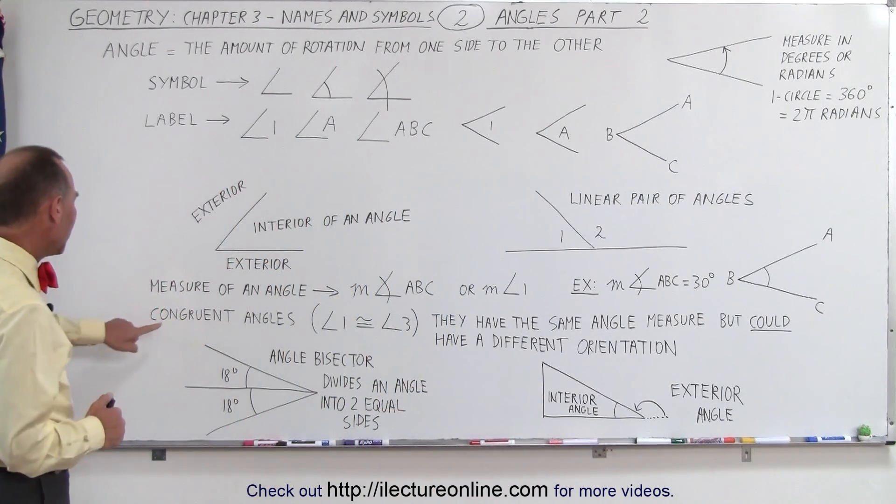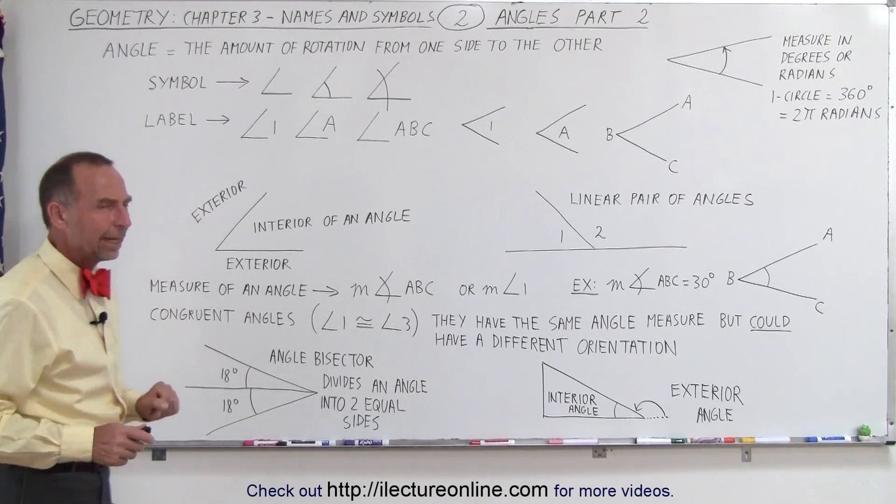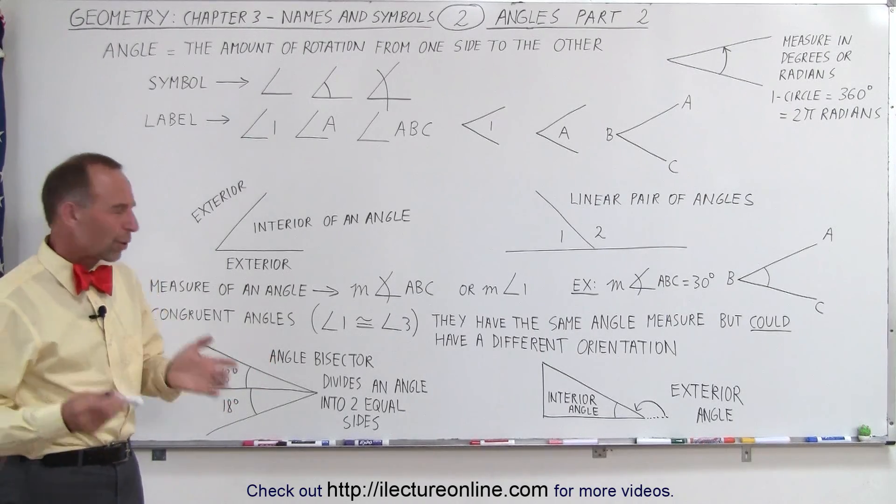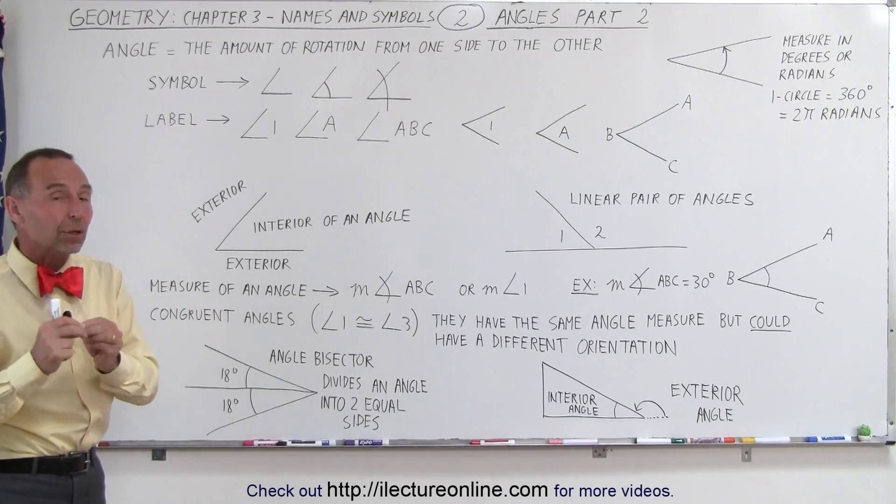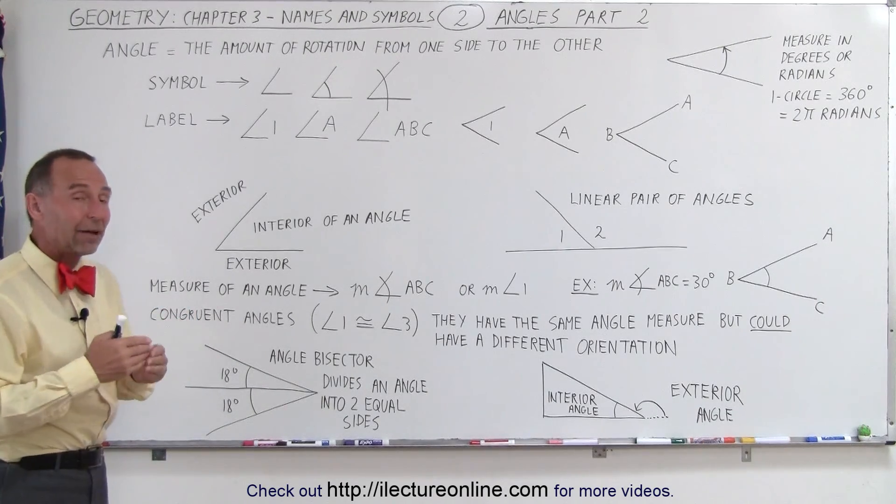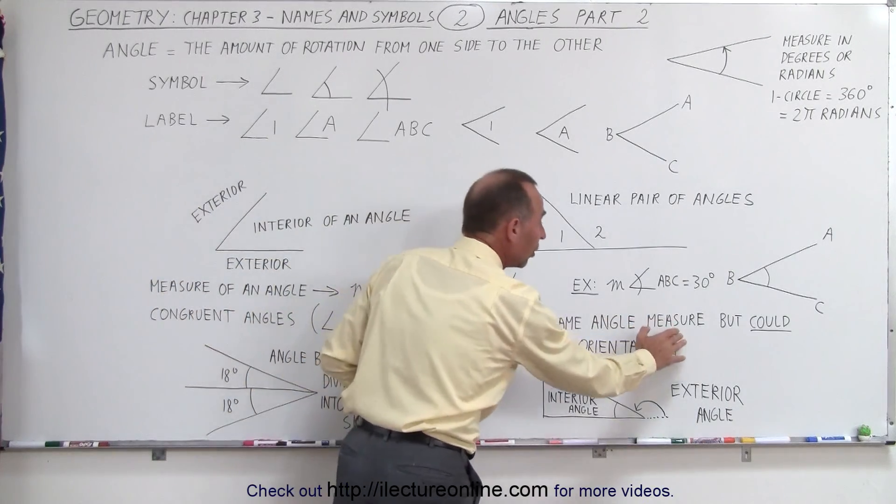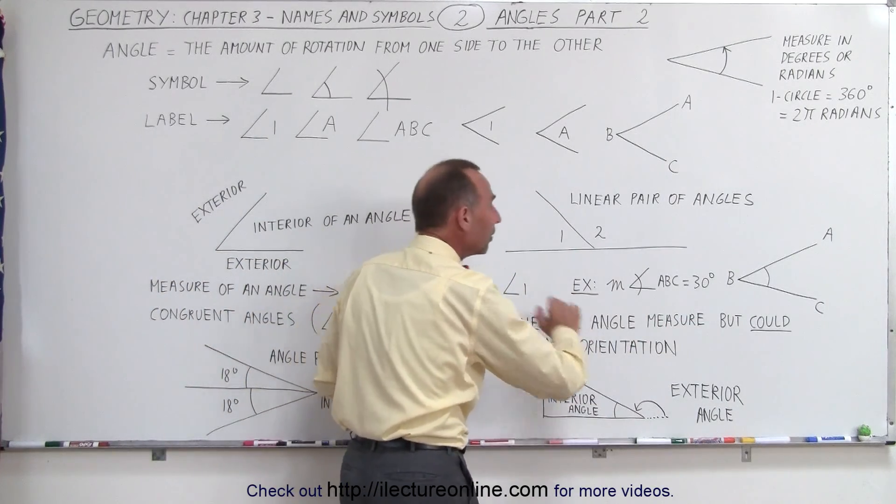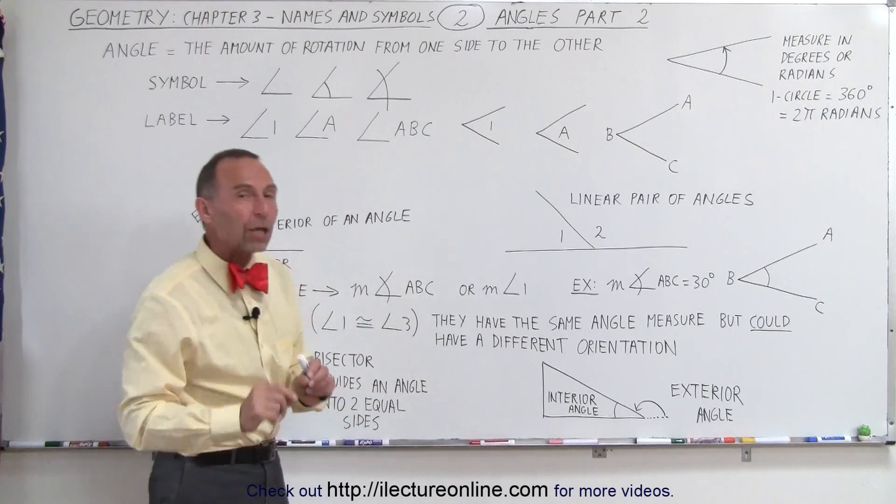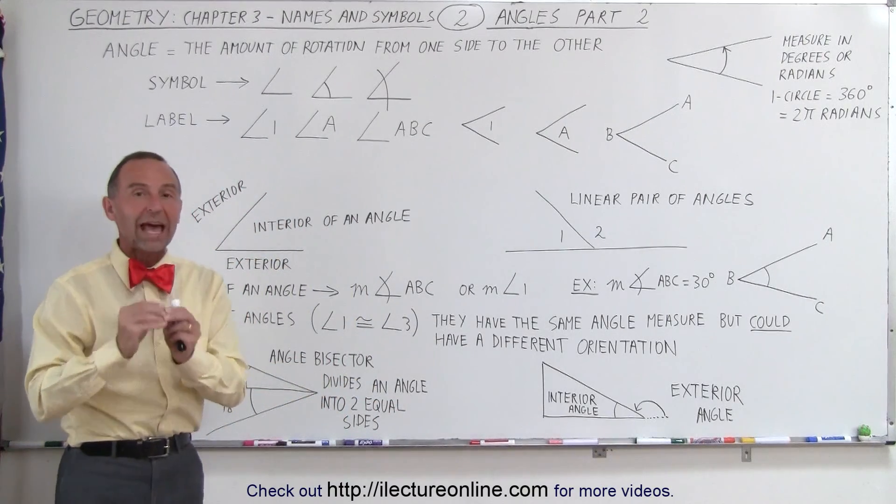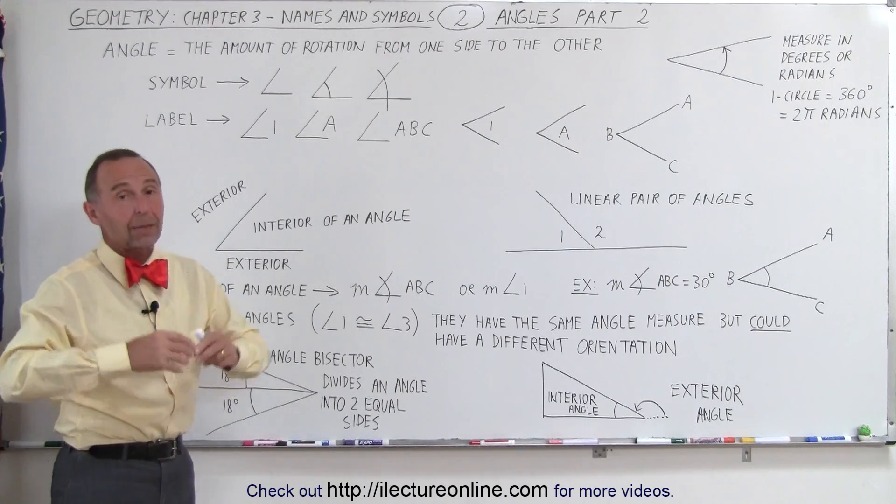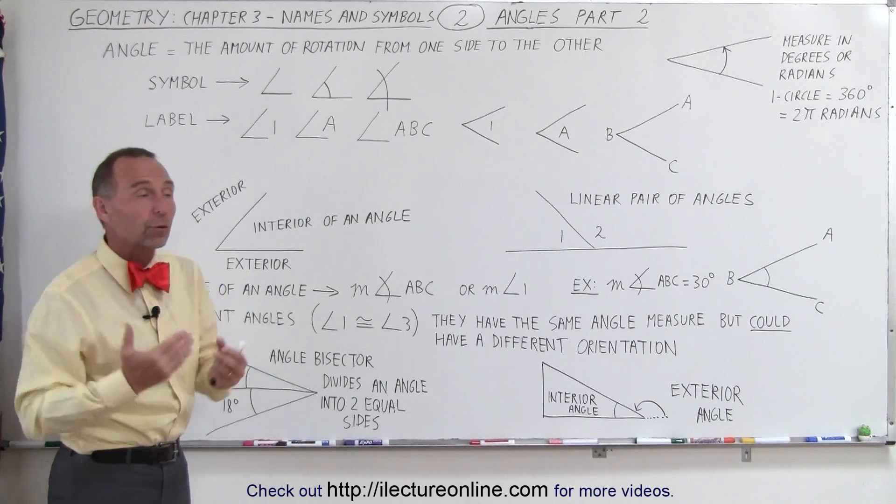Now let's talk about the word congruent. I always felt that congruent was kind of a strange word, but what it means is that the angles are very similar. In other words, they have the same angle measure but could have a different orientation. So in all cases, when angles are congruent, they definitely must have the same angle measure.